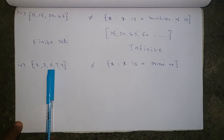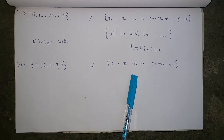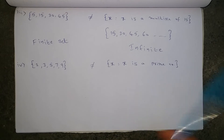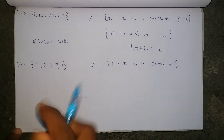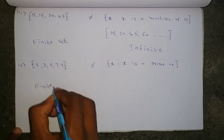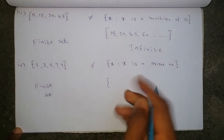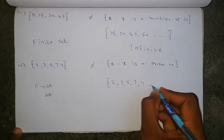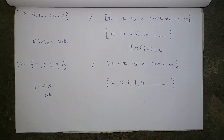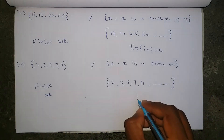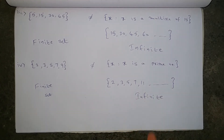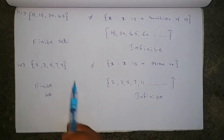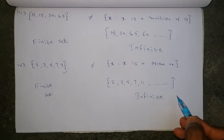Next, {2, 3, 5, 7, 9} is not equal to the set X such that X is a prime number. Writing all prime numbers: 2, 3, 5, 7, 11 and so on — this is an infinite set, whereas the first set is a finite set, so they cannot be equal. Additionally, element 9 is in the first set but 9 is not a prime number, so 9 does not belong to the second set. That is why these two sets are not equal.